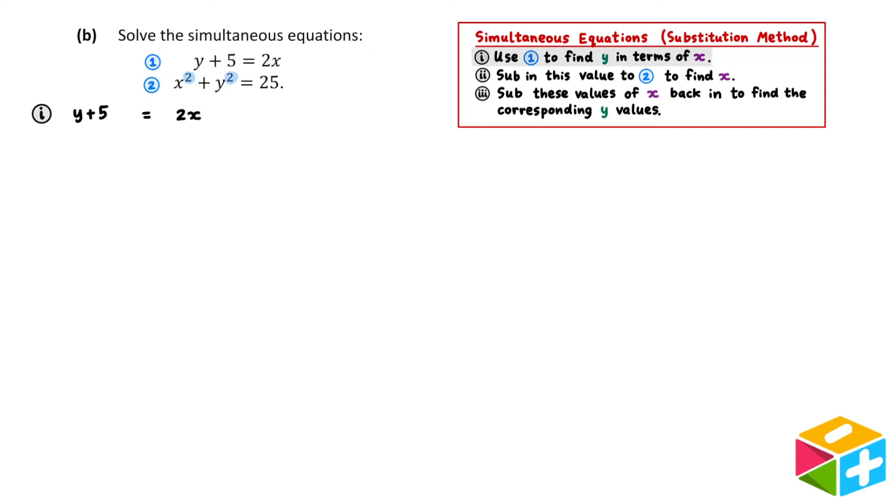Equation 1 states that y plus 5 is equal to 2x. We want to find y in terms of x. In other words, to isolate y all by itself on one side of the equation. To do this, all we have to do is remove the plus 5. The inverse of addition is subtraction, so to remove a plus 5 I'm going to subtract 5 from both sides.